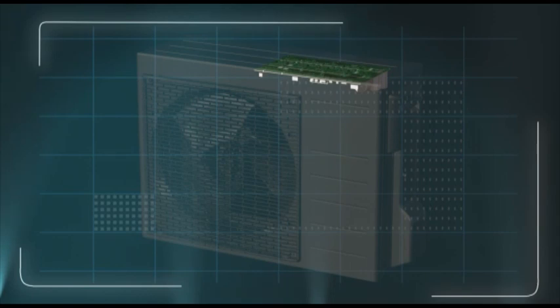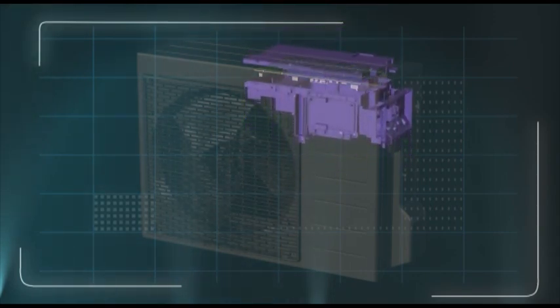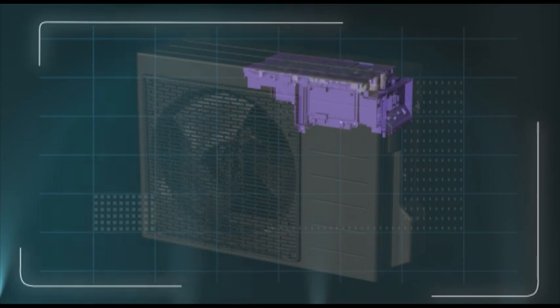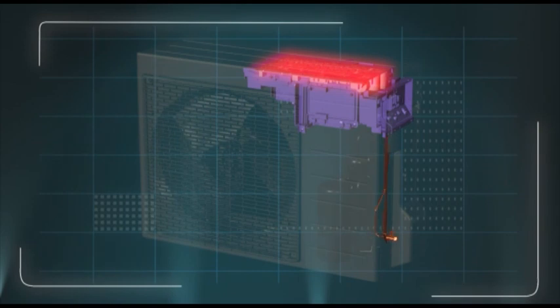A tightly sealed electronic component box prevents sand particles from entering inside. The heat that builds up is reduced by placing coolant pipes drawn from the refrigeration cycle.